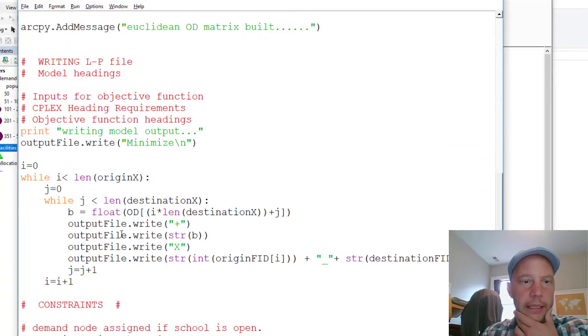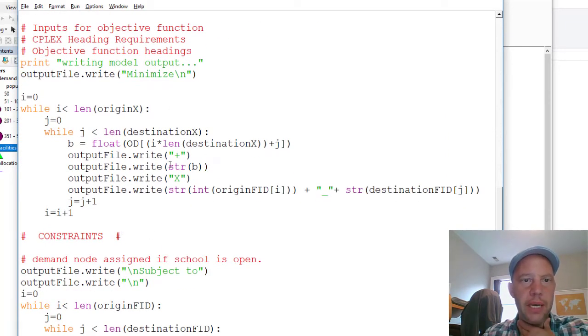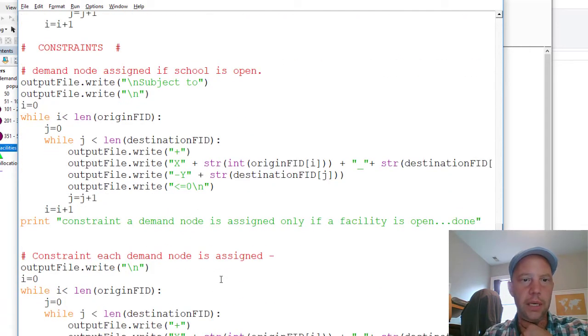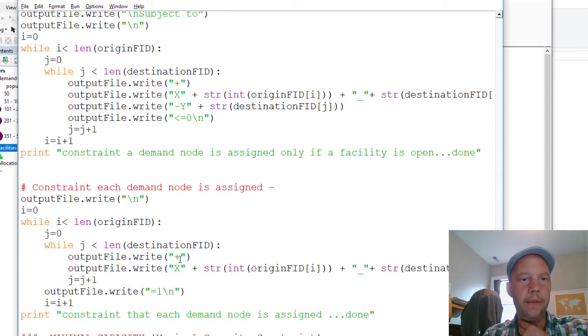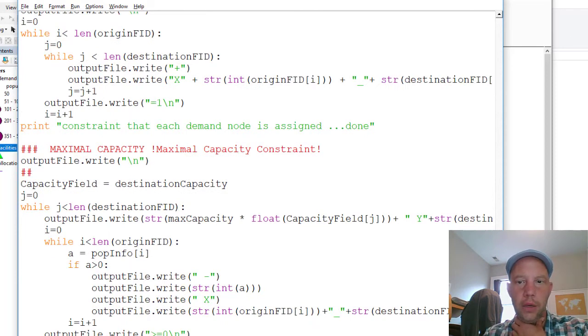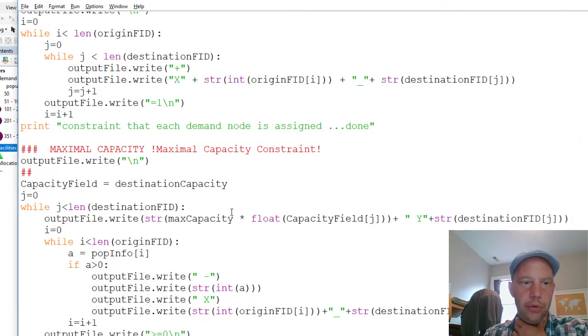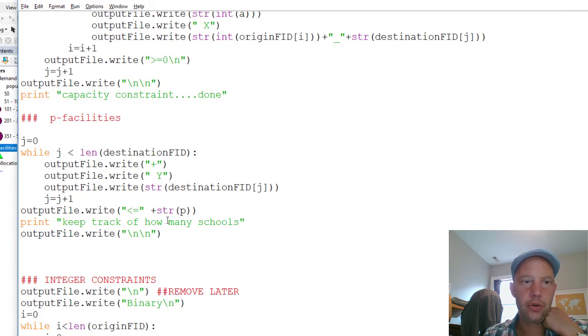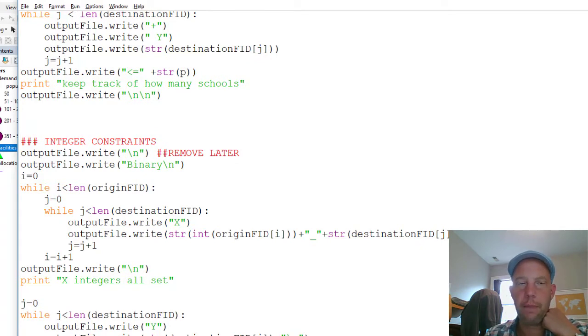Next step is to generate the LP file, which here we're trying to minimize the total weighted travel from each demand node to the facility, subject to a few constraints. The first one says that if there is an allocation from a demand node to a facility, then that facility should exist, that every demand node must be served, and then that the sum of the demand going to a facility should then be less or equal than the total capacity of the facility. We can only open p facilities that's tracked here, and then we have a few integer constraints here as well. So we can run this one.